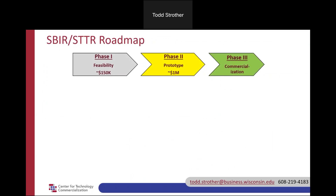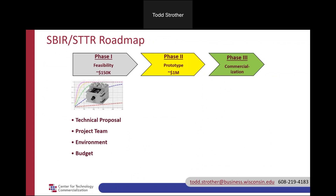This slide shows a typical path a company might take through the SBIR process. First, there is Phase 1 money used to do research to show feasibility — basically that your idea might actually technically work. The amount for Phase 1 varies from about $50,000 to upwards of $275,000, and sometimes more. Typically the project is six months, or it could go as long as a year. A Phase 1 project requires a technical proposal, a good project team, the ability to do the work, and a budget that makes sense.